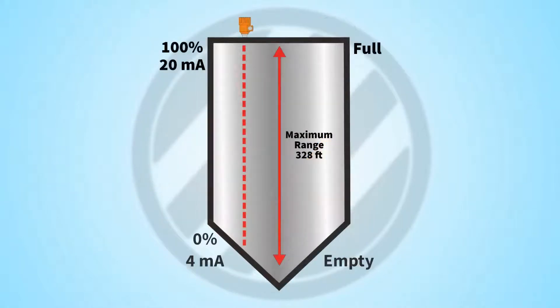Once the radar is positioned, we need to think about the parameters we will input into the program and the milliamp output it will provide. The radar provides a 4 to 20 milliamp loop signal and will usually go up to a digital display or a PLC where the information can be viewed. Setting the range covered by this 4 to 20 milliamp signal is key to an accurate reading — typically 4 milliamps is empty and 20 milliamps is full.